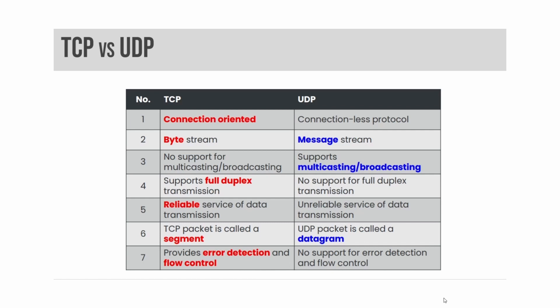TCP is a reliable layer 4 protocol. TCP uses a three-way handshake to create reliable connections across the network. TCP can reorder segments that arrive out of order and retransmit missing segments.